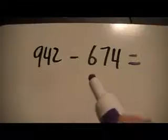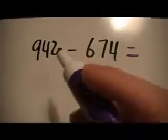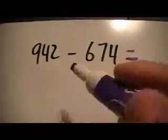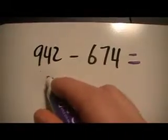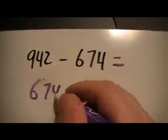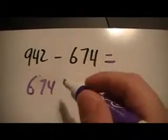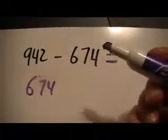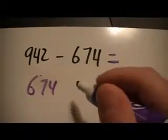You're still using addition to find the difference between 674 and 942. Kids will start with 674, and they're going to use what they know to try to get to easier numbers to add on to, like round numbers.